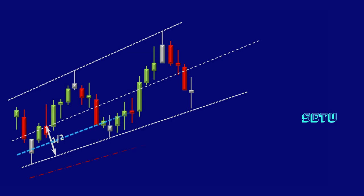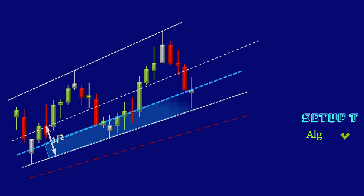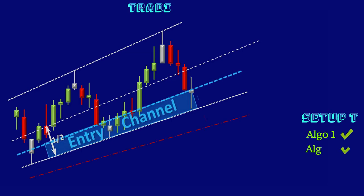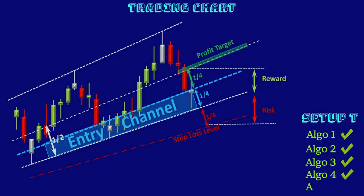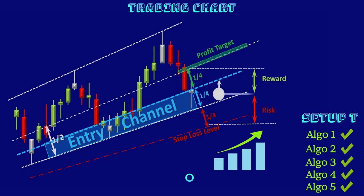You have learned in the previous modules how to find the best entry signal and profit target in the right location of the dynamic channel using five algorithm conditions. This profitable trading system based on one entry and one exit target should be practiced in the first year till the trader becomes consistent.